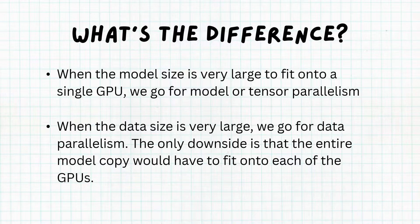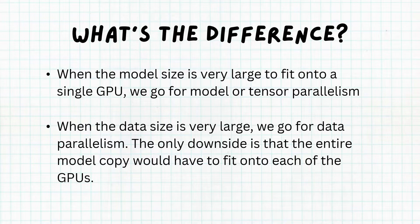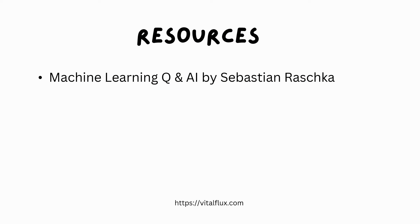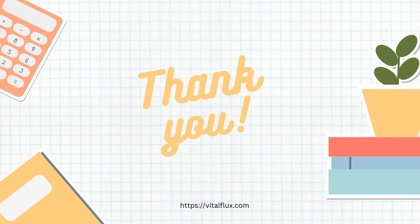The key difference is: when the model size is too large, we use either model parallelism or tensor parallelism. When the data size is very large, we go for data parallelism. The only downside of data parallelism is that the entire model copy has to fit on each GPU. If you want to learn more, you can check out the book 'Machine Learning Q and AI' by Sebastian Raschka. That's all for now — have a nice day, and please don't forget to subscribe to my channel.